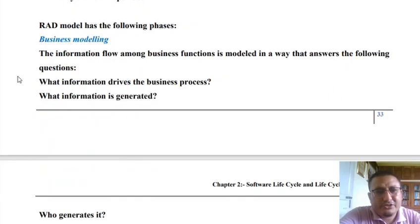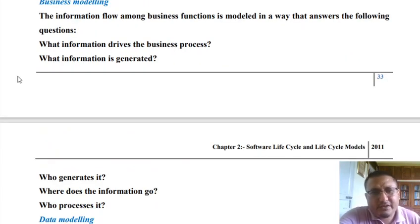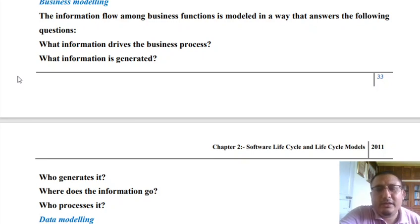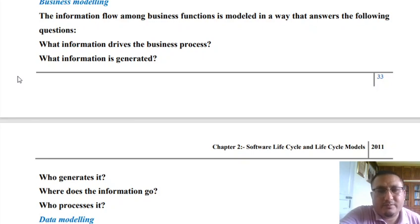Rapid Application Development has the following phases. The first phase is the Business Modeling Phase. It is very important for us to identify the various entities participating in realizing the business. The objective of the Business Modeling Phase is to facilitate identification of all the entities — or objects — that are participating in realizing the business.